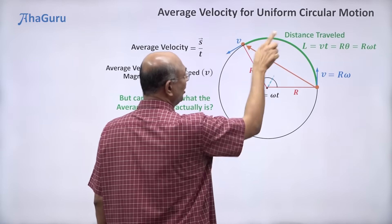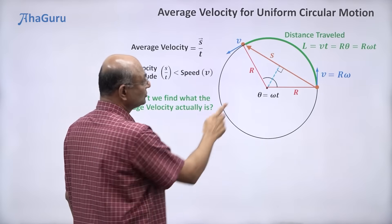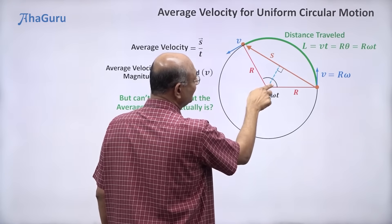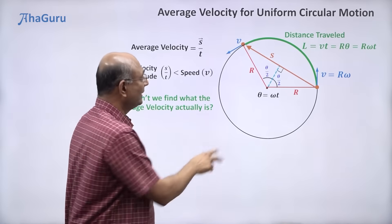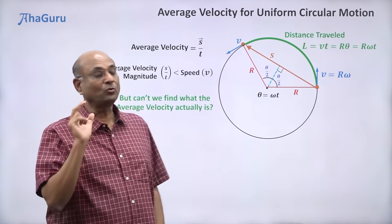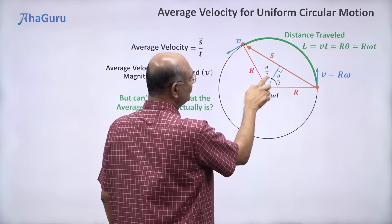And for an isosceles triangle, if I drop a perpendicular, it is also the angle bisector. So that means this was theta. So this will be theta by 2, that will be theta by 2. It splits up these two as two theta by 2s.